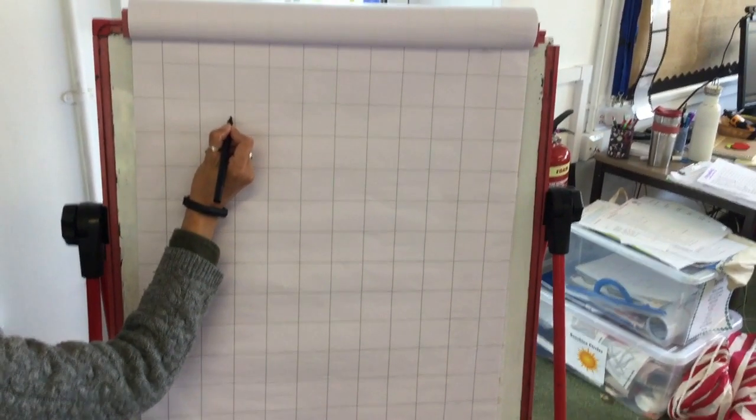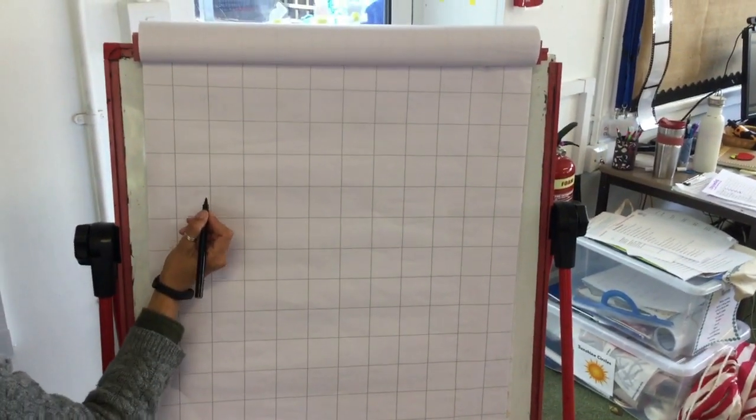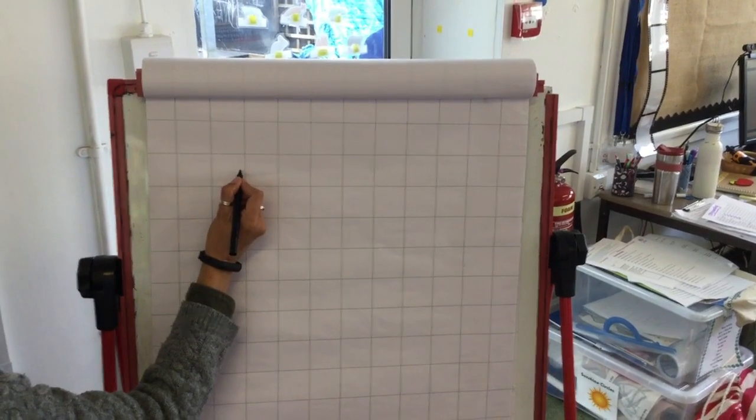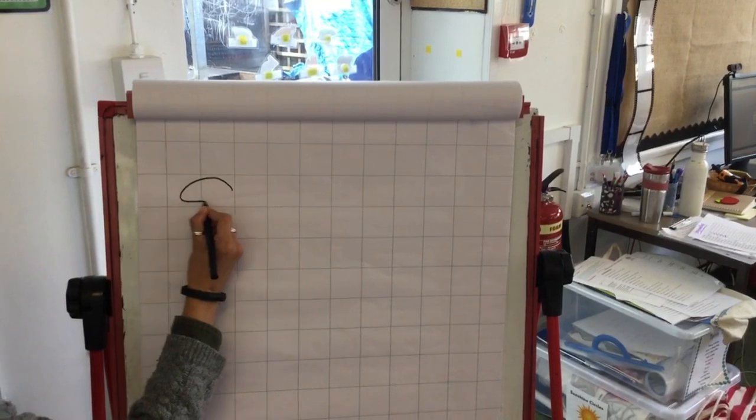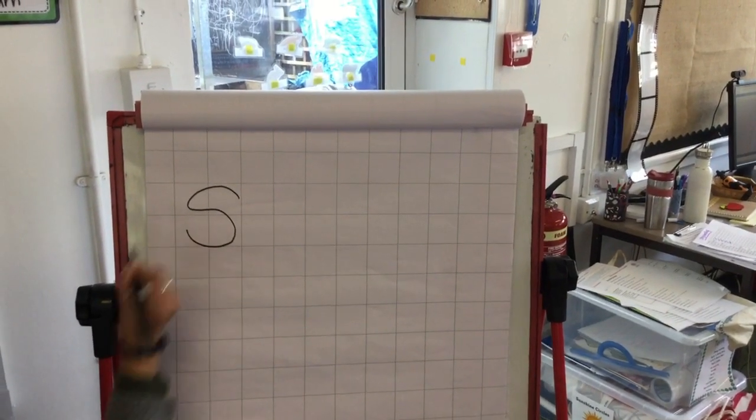Now we're going to have a look at how we form our letters. Let's start with the S sound. We go down the slippery slide. S.